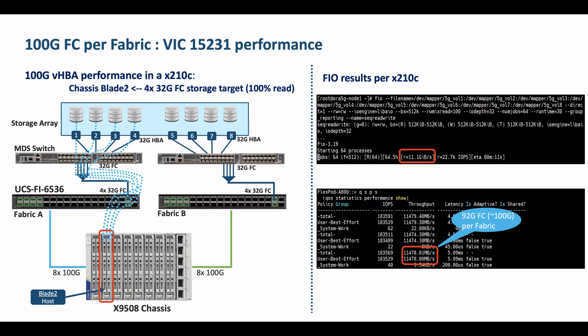In this screen capture, the 100GB VHBA on the X210C compute node is connected to the fiber channel storage LUNs over four different 32GB fiber channel targets in the same fabric. As shown, a single X210C compute node with 5th gen UCS fabric can cumulatively scale to 100GB fiber channel IO across each fabric interconnect.